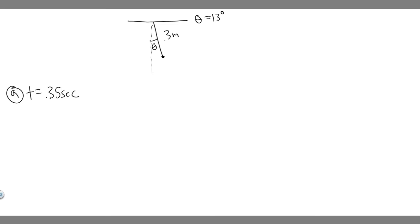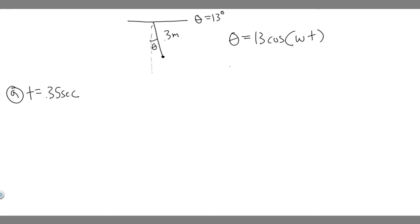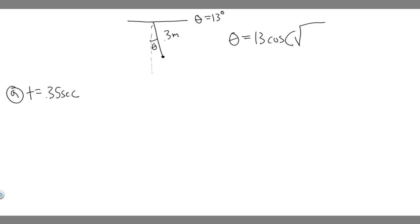How do we solve this problem? There's a formula you need to know: the angular position theta is equal to the initial angle — in this case 13 degrees — times the cosine of the angular frequency multiplied by the time. Keep in mind, angular frequency equals the square root of gravity divided by length. So theta equals the initial angle times cosine of the square root of g divided by L, multiplied by t.